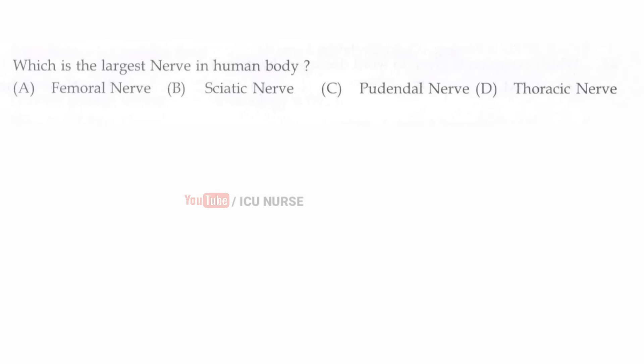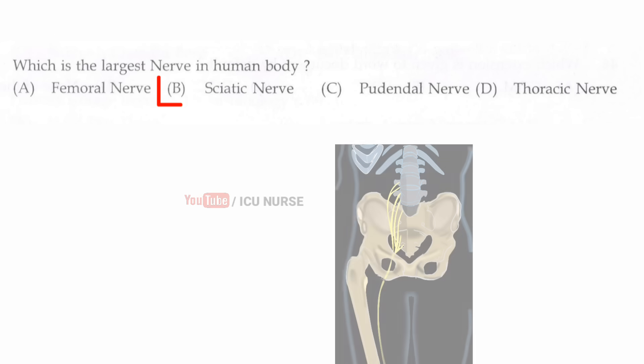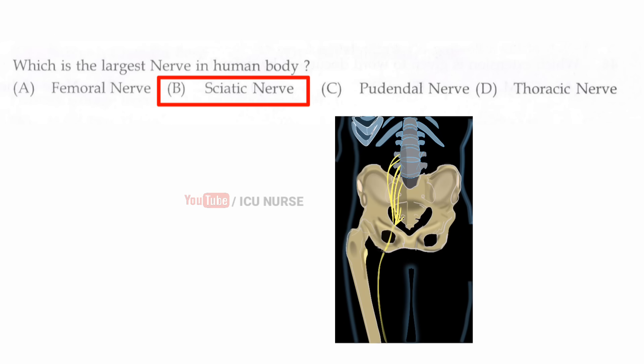Which is the largest nerve in the human body? The correct answer is B, sciatic nerve. The sciatic nerve is the largest nerve in the human body.